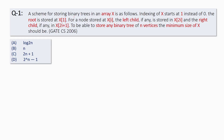A scheme for storing binary trees in an array x is as follows. Indexing of x starts at 1 instead of 0. The root is stored at x[1]. For a node stored at x[i], the left child, if it exists, is stored at x[2i] and the right child, if it exists, is stored at x[2i+1].